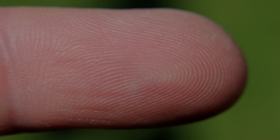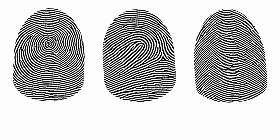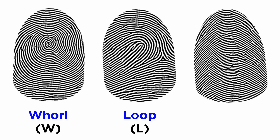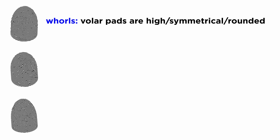Different sizes and symmetries of volar pads give rise to different patterns. Look at the patterns here and compare them with your fingers. The three main fingerprint patterns are whorls, loops, and arches. You can see that they look exactly how their names suggest. Whorls are formed when the volar pads are high, symmetrical, and rounded.